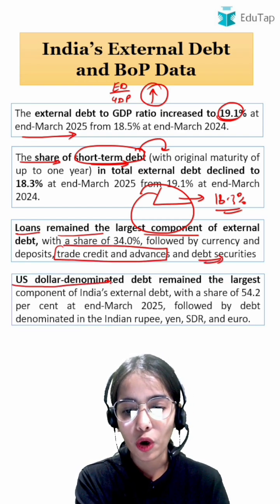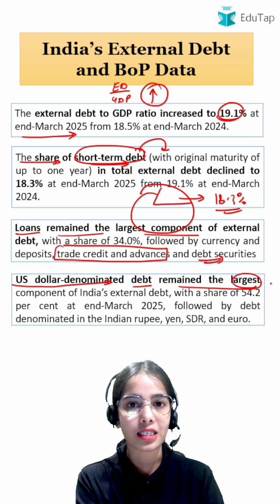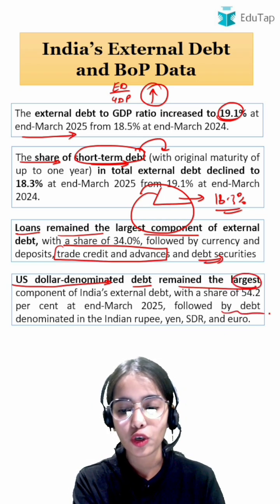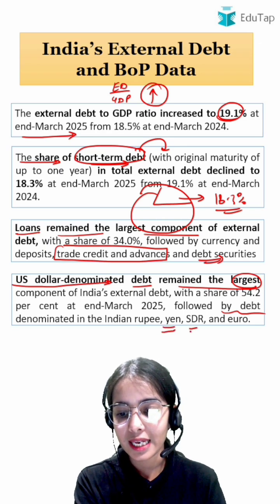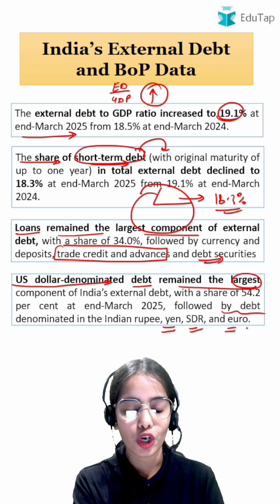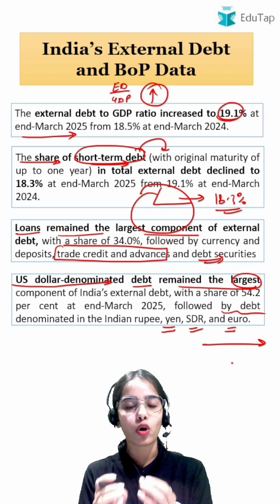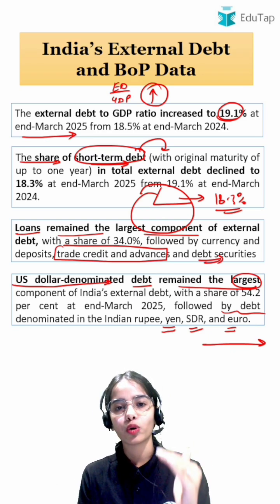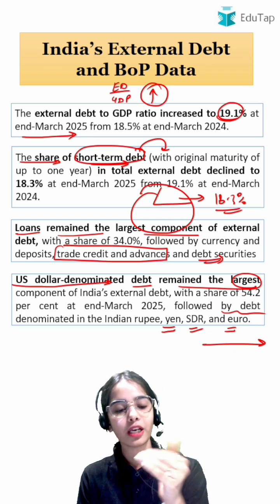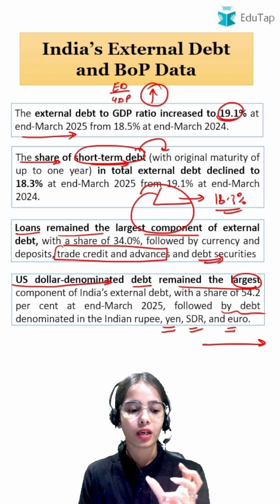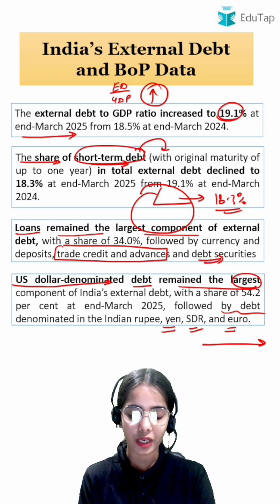The US dollar denominated debt remains the largest component of India's external debt, followed by debt denominated in Indian rupee, then yen, SDR, and euro.